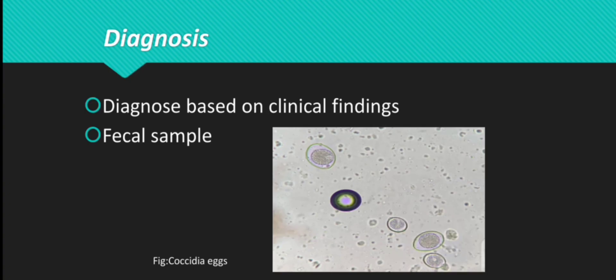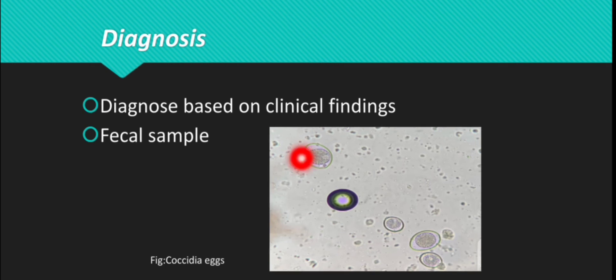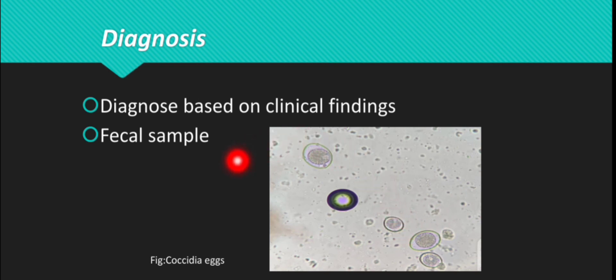How we diagnose this disease: we diagnose based on clinical findings. You can also take a fecal sample — take the dropping, put some on a slide, and examine it under a microscope. You will find coccidial eggs, and this will confirm that it is coccidiosis that your chickens are suffering from.